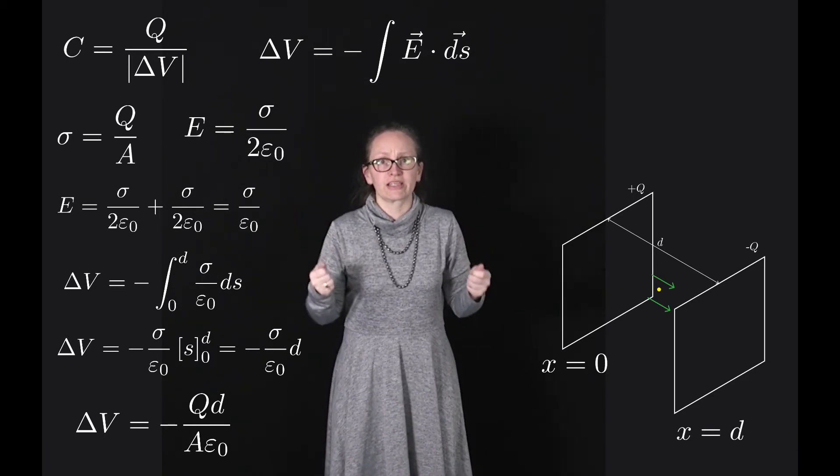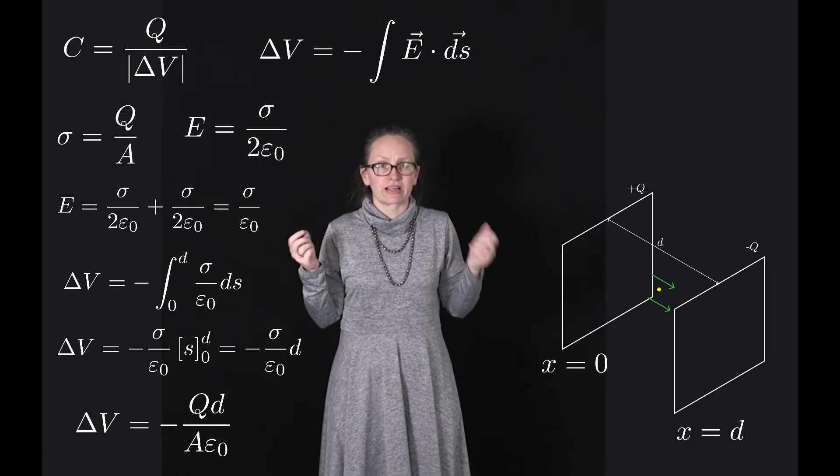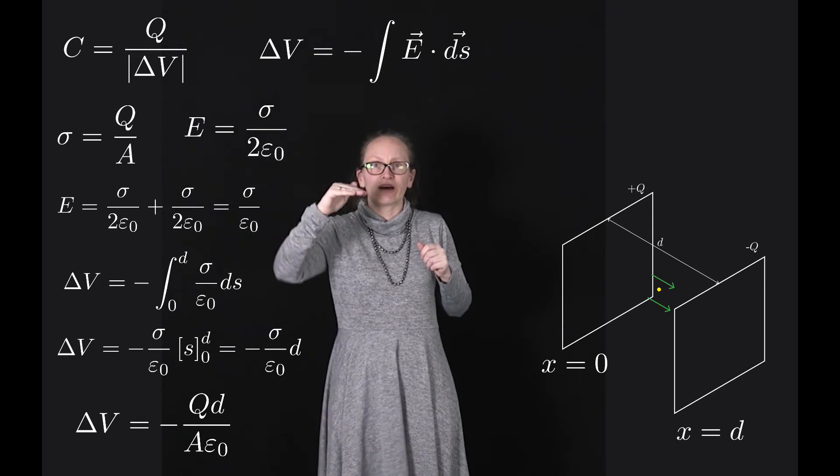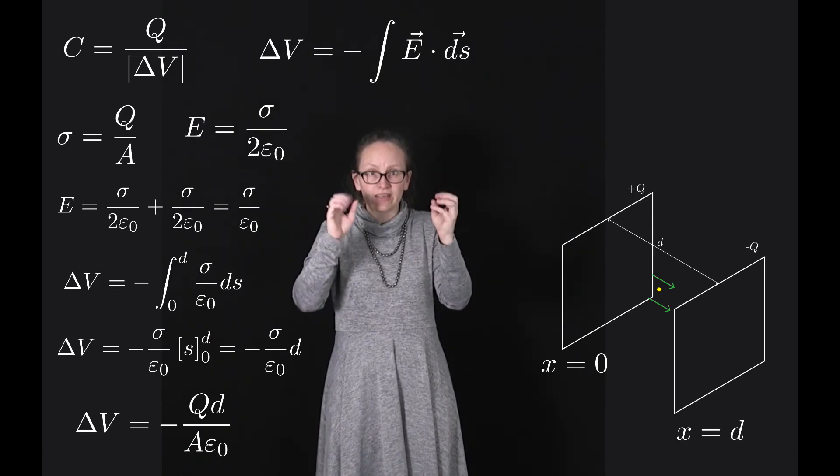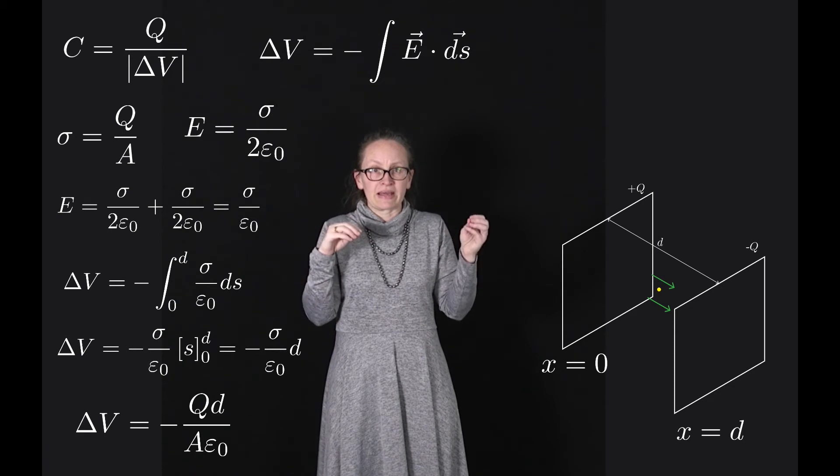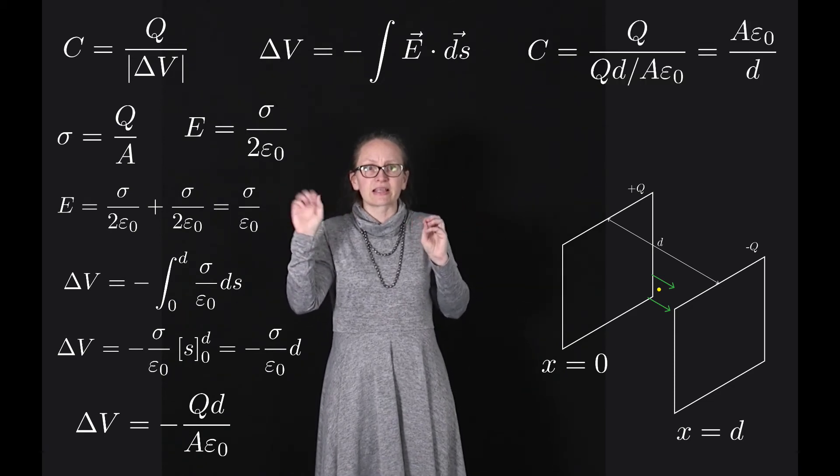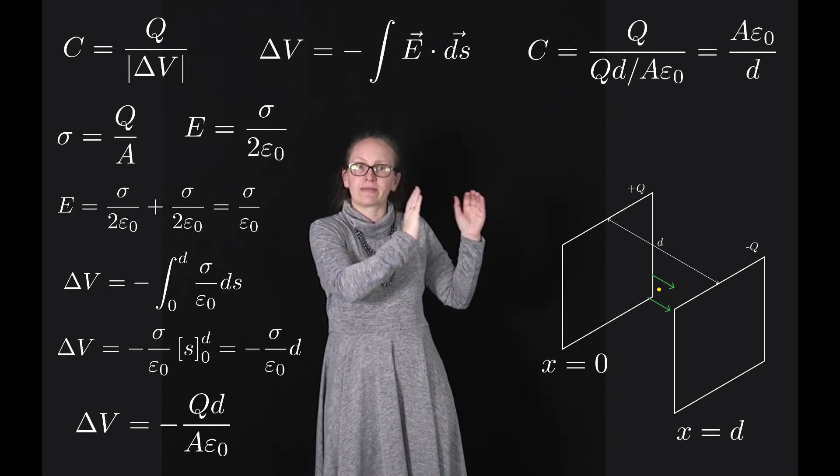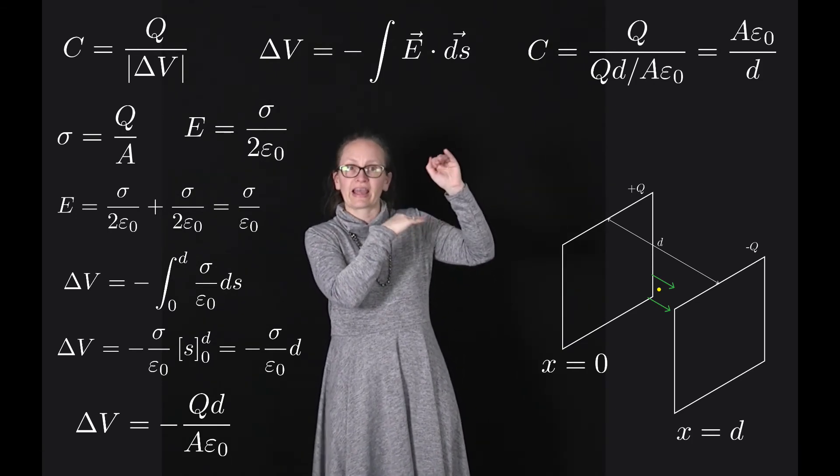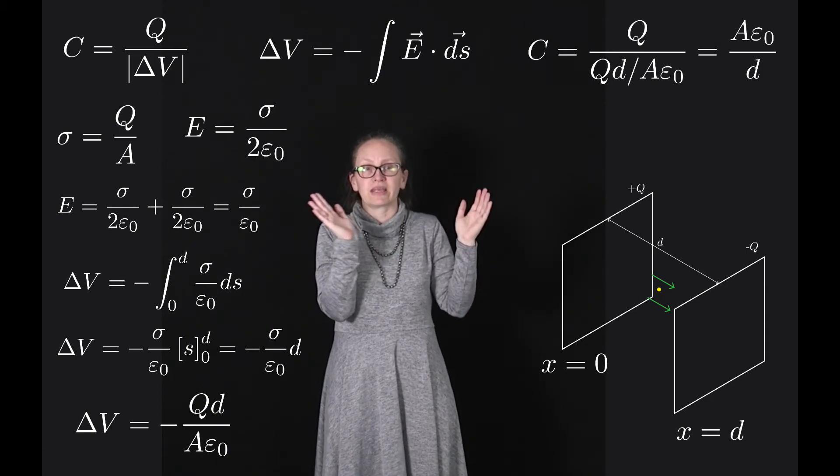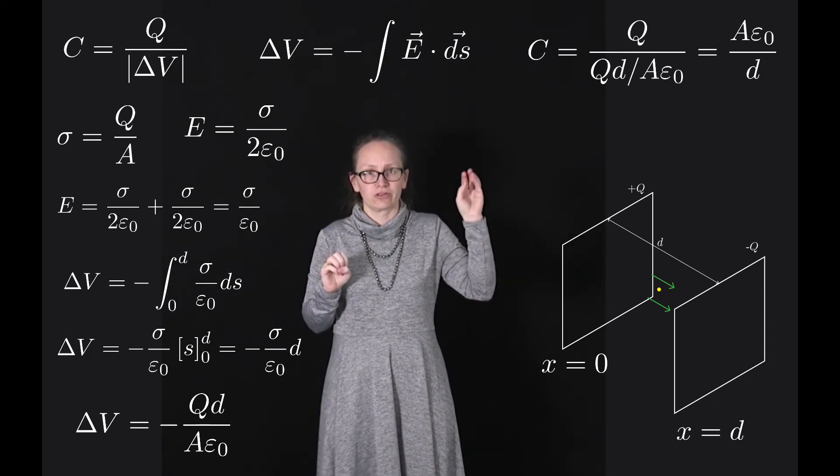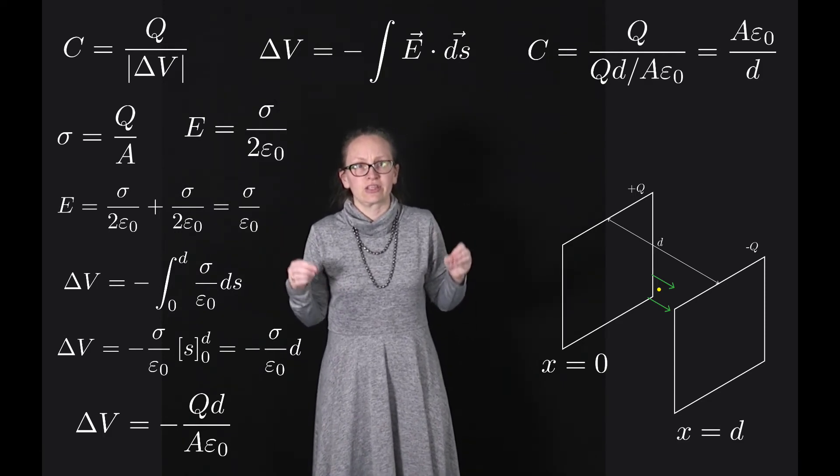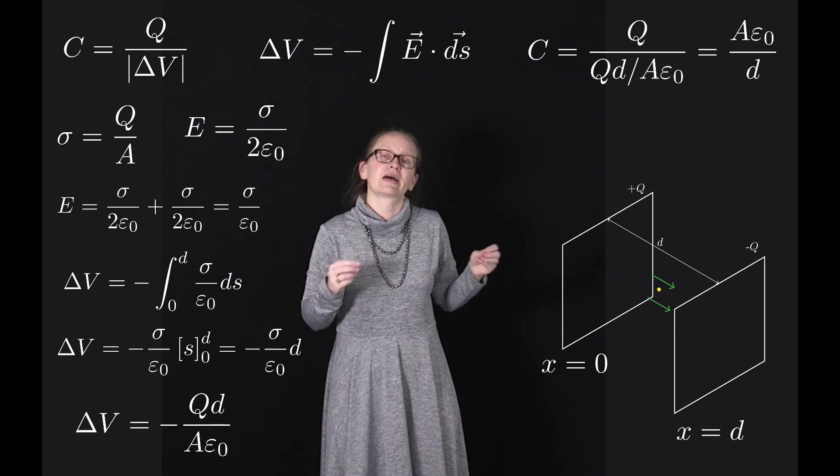What we were trying to get was the capacitance. So finally we can use our capacitance equation, that the capacitance is equal to Q divided by the absolute value of delta V to come up with the capacitance. So the capacitance in this case is equal to Q divided by Qd over A epsilon naught. You can see the Q's then cancel out, and we're left with this being equal to A epsilon naught over d. This is actually the equation that gives the capacitance of a parallel plate capacitor.